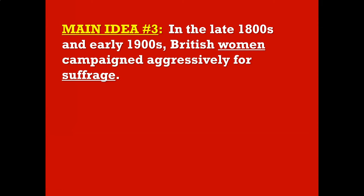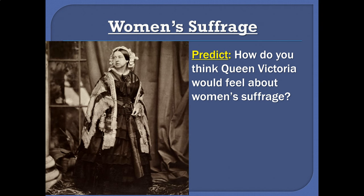Now let's talk about women's suffrage. When we discussed Britain's expanding democracy, we learned that more and more men were getting the right to vote. What about women? Well, being that Britain is ruled by a woman, you might predict that Queen Victoria would be a big fan of women's suffrage — but you'd be wrong. Queen Victoria actually was not a fan of women's suffrage. She famously called it a 'mad, wicked folly' — a mistake that women should have the right to vote.